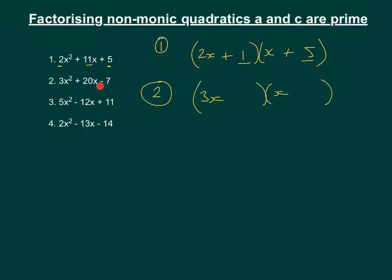And because c is negative, it means 1 is going to be positive, 1 is going to be negative. And the numbers are going to be either 1 or 7.